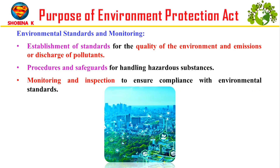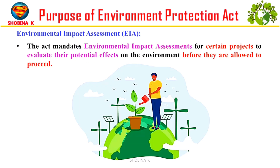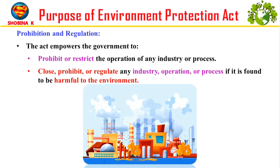Environmental standards and monitoring: EPA makes rules for how clean the environment should be and how much pollution is allowed. It establishes safety rules for hazardous substances and monitors compliance closely to keep the environment clean. Next: environmental impact assessment — the EPA requires assessments to be conducted before certain projects are undertaken to evaluate their potential environmental impacts.